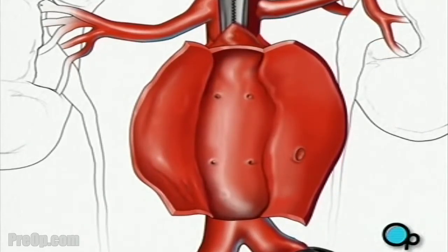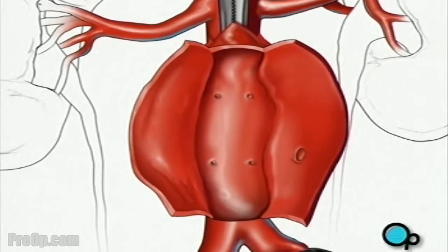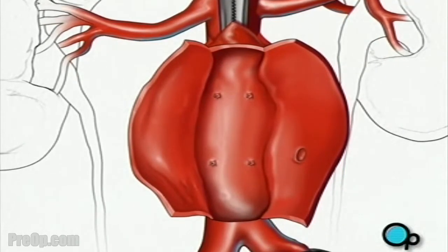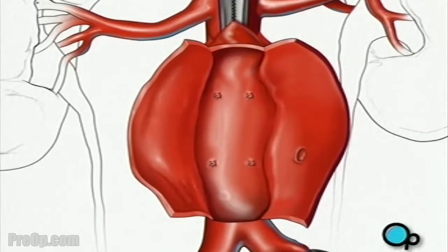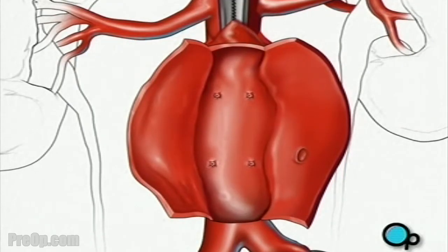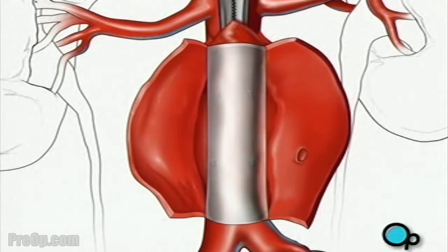The surgical team will sew together any damaged blood vessels inside the aorta. A tube made of a sterile synthetic material can now be inserted into the blood vessel to provide support and reinforcement. It is then sewn into place.